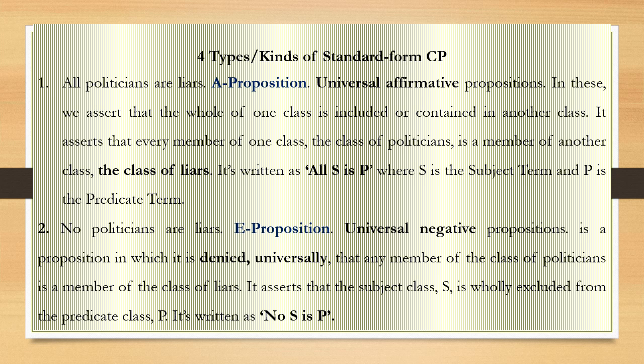The E proposition — 'No politicians are liars' — is a universal negative proposition. You are denying something universally: that any member of the class of politicians is a member of the class of liars. It asserts that the class S is wholly excluded from the predicate class P. This is a proposition of denial and exclusion among the classes, written as 'No S is P.'